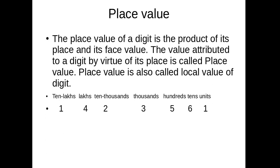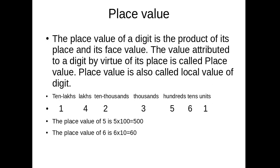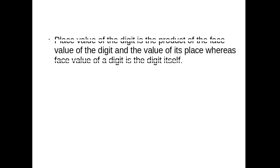The place value of 5 is 5 × 100, since 5 is in the place of 100, giving 500 as the place value. Then, the place value of 6: since 6 is placed in the 10s place, we multiply 6 and 10 to get 60. In comparison, the place value of a digit is the product of the face value of the digit and the value of its place, whereas the face value of a digit is the digit itself.